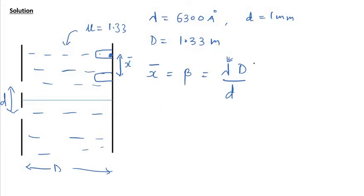So now the new wavelength would be lambda original divided by mu, because at this point the wavelength of light would be lesser than that of the air. This is the wavelength in air, but when we dip this inside water, when we dip this source inside water, its wavelength decreases by mu times. So multiply by capital D by small d. So x bar is equal to lambda, that is 6300 into 10 raise to minus 10 meters.